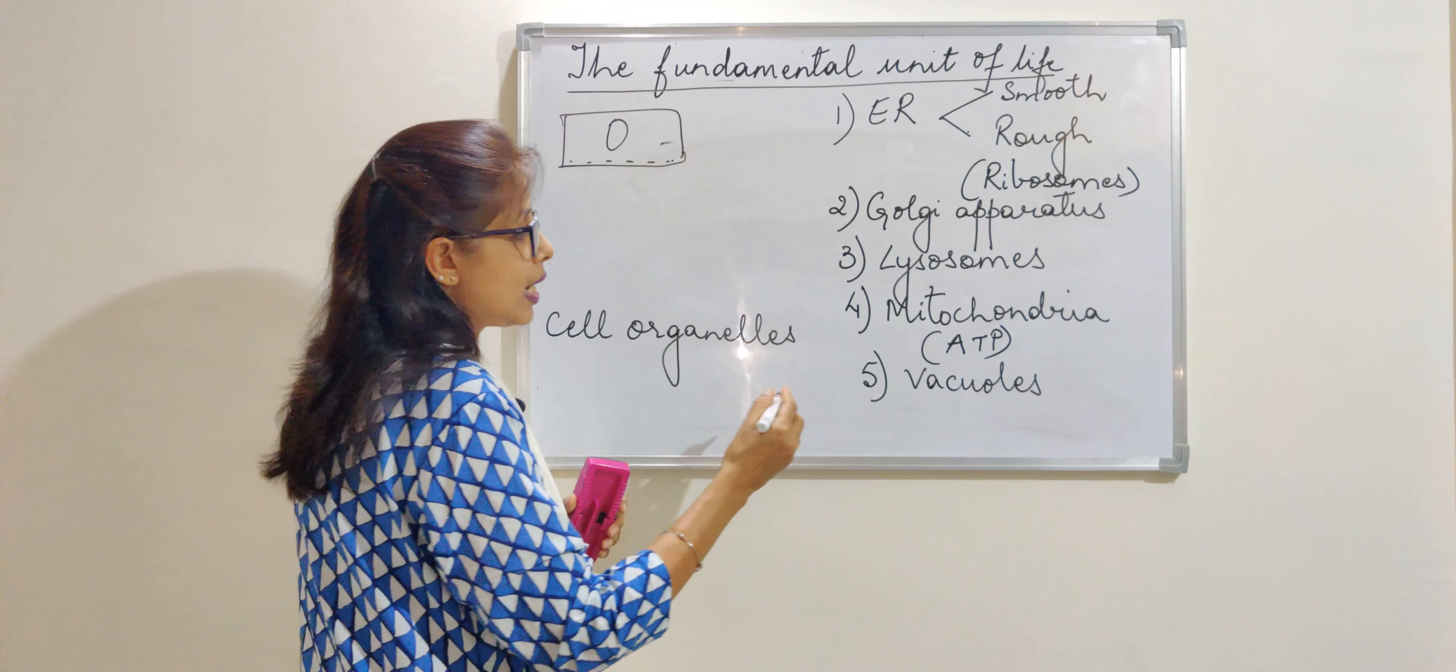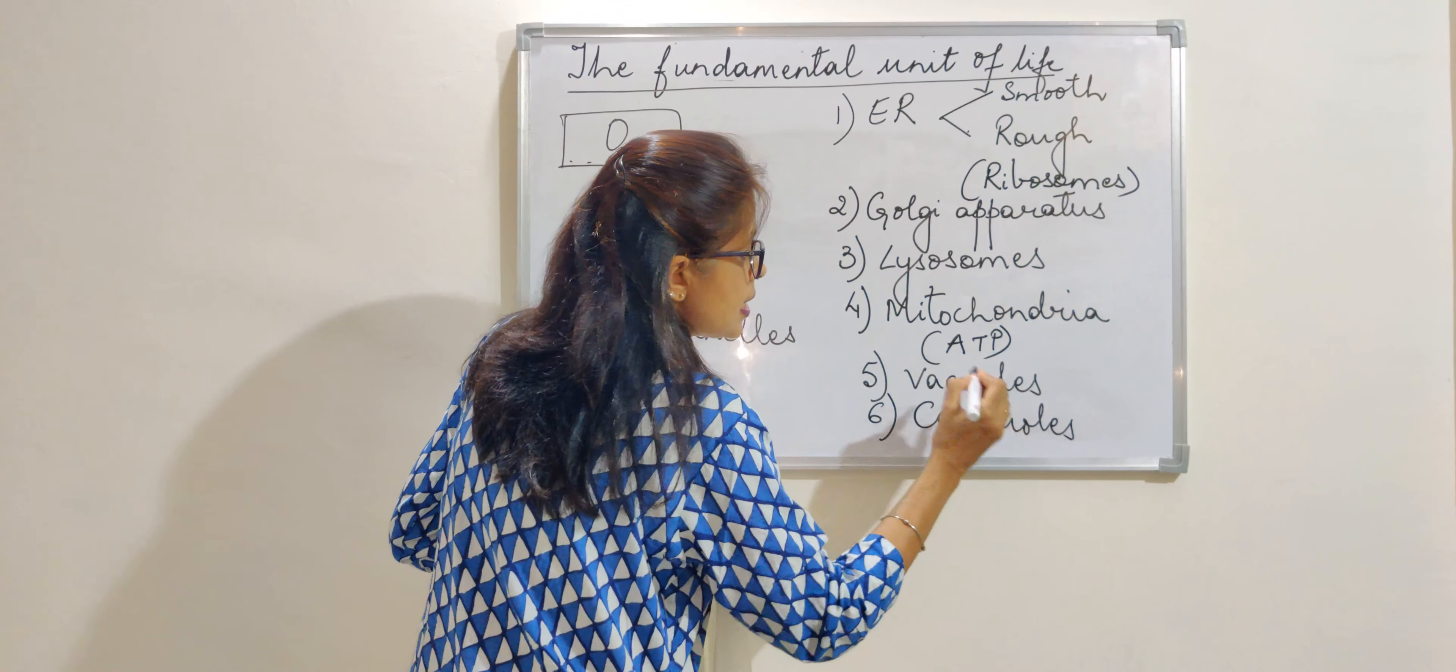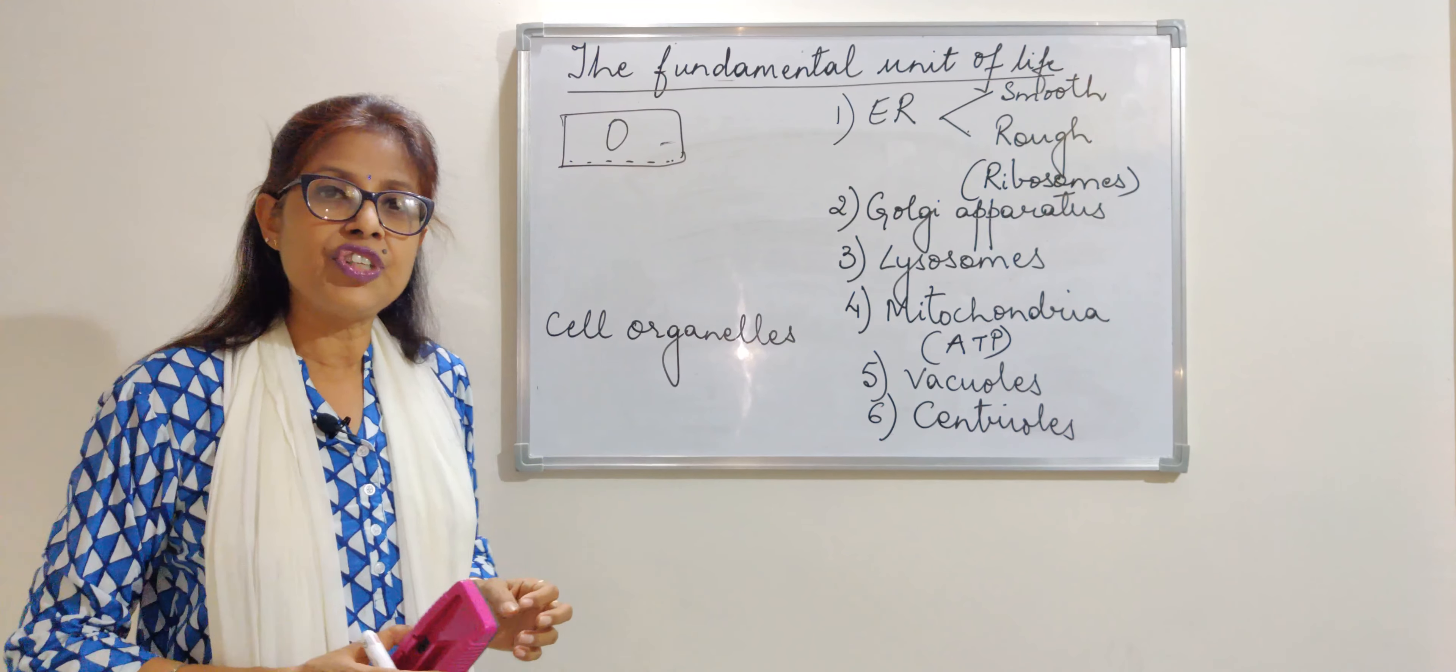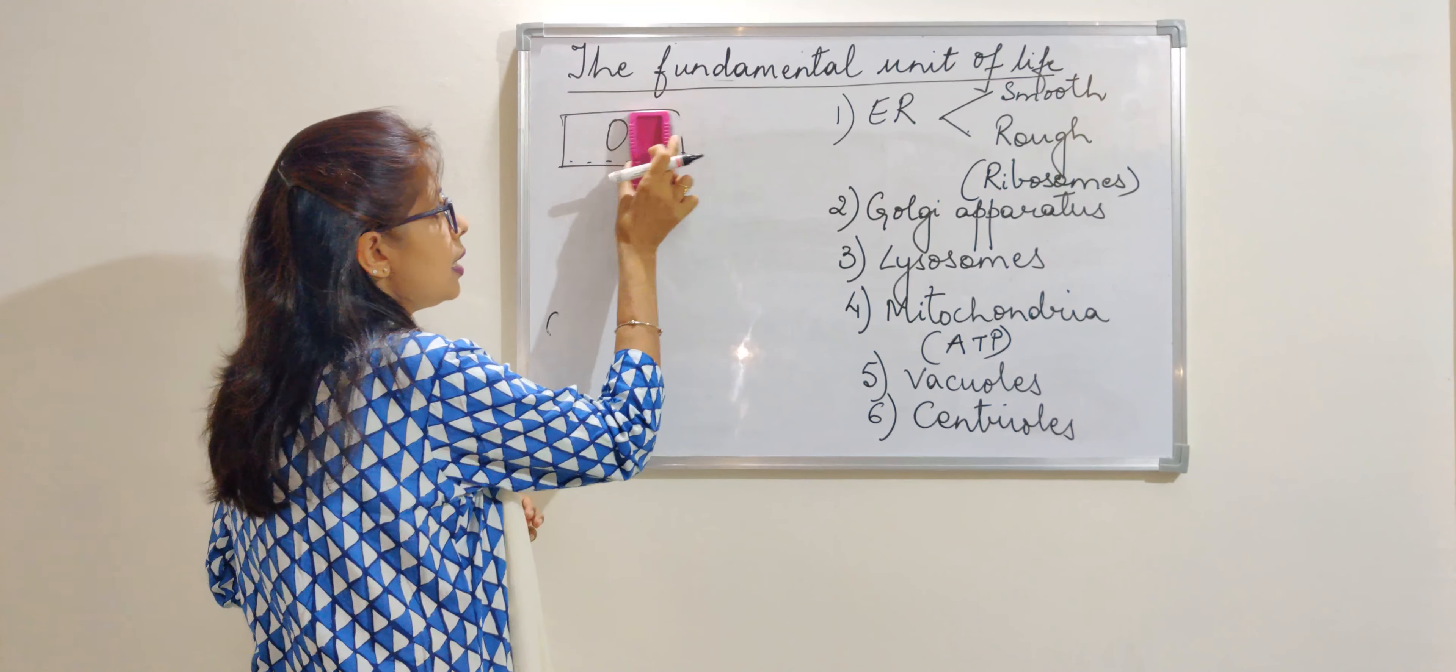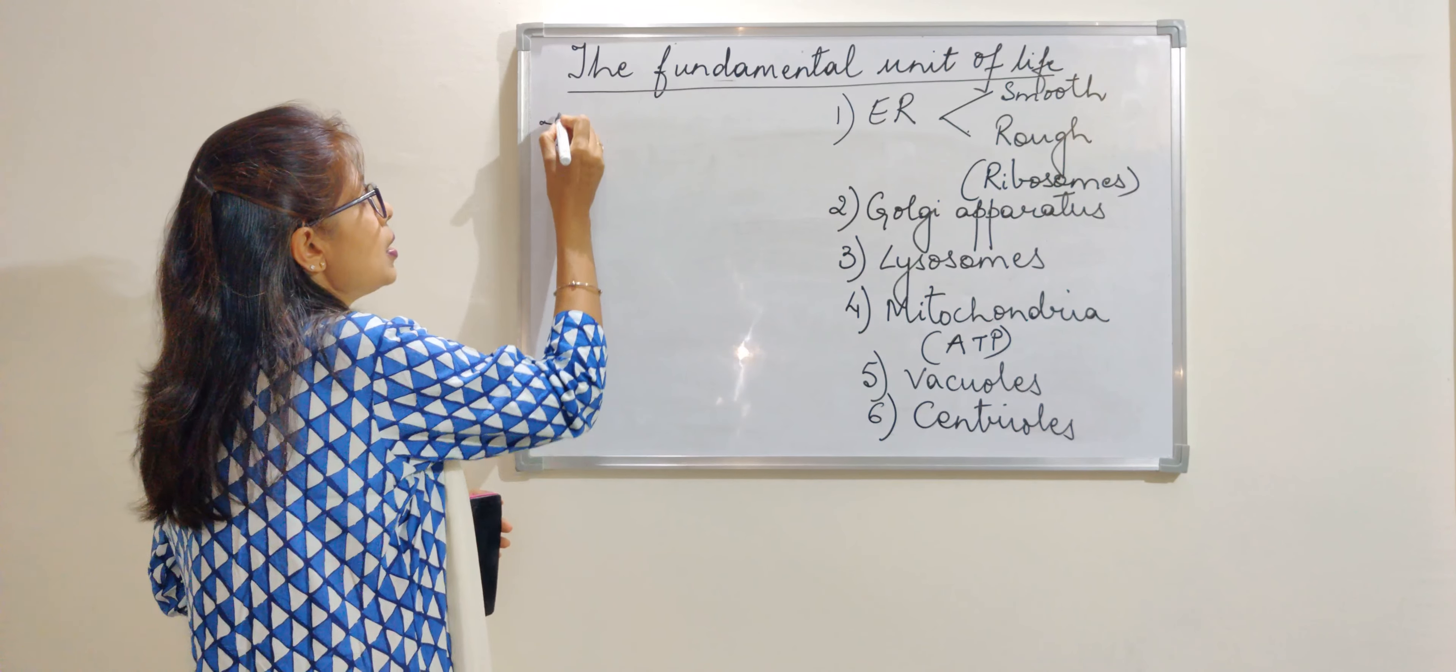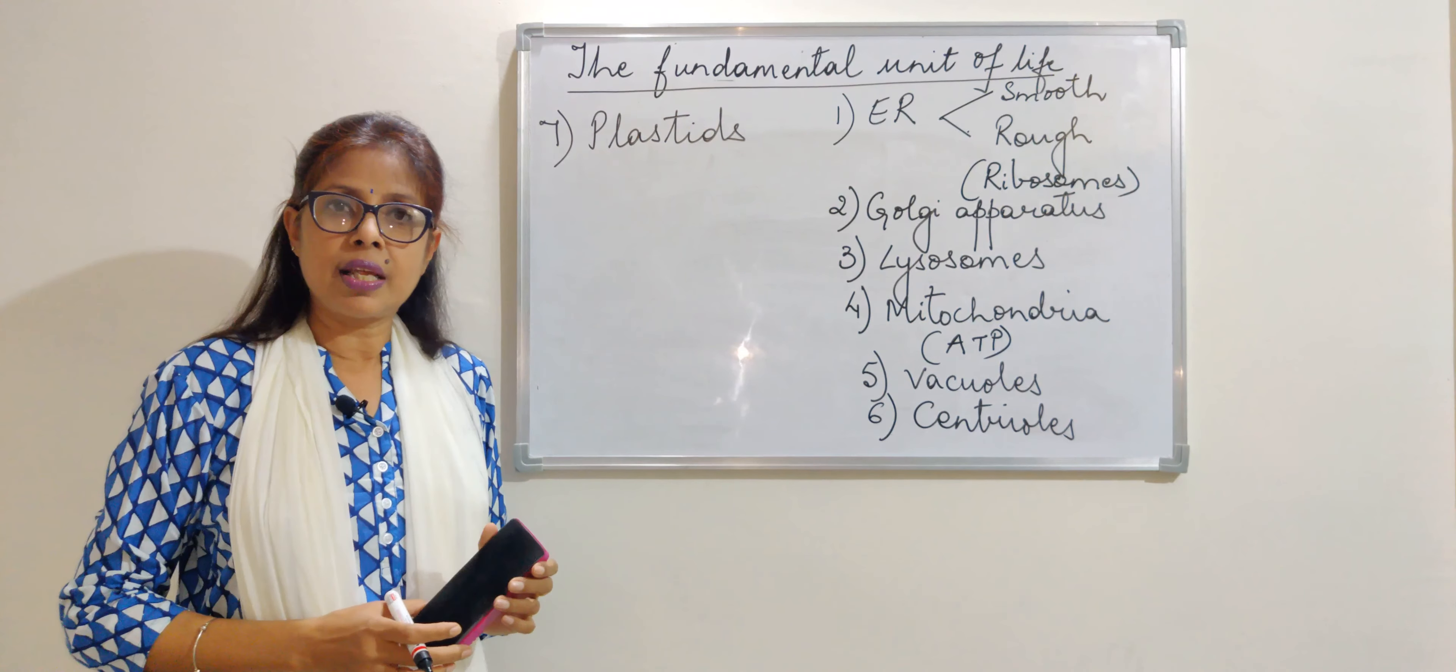And after the vacuoles, next one that we study is the centrioles. Centrioles are that cell organelle which is present only in animal cell and they help in cell division. They are not found in plant cell. The next one that we are going to study is the plastids.